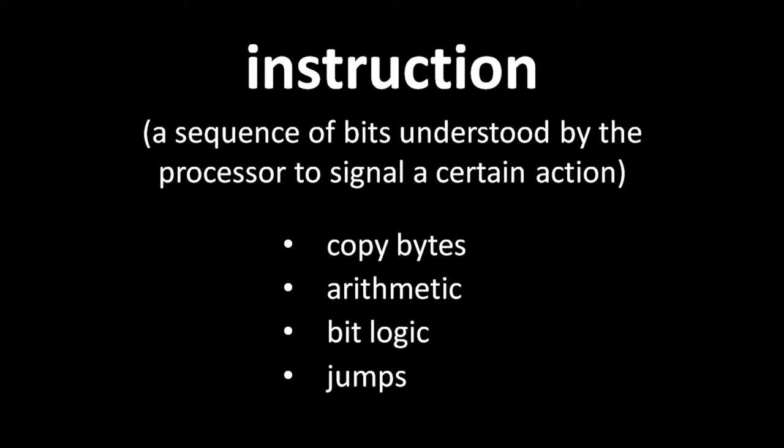The binary sequence which denotes any particular instruction is largely arbitrary, and so different CPUs understand different sets of instructions. For example, the binary sequence denoting an addition instruction on one CPU may not be a valid instruction on another CPU. In fact, one CPU may have instructions which another CPU does not have at all. Some simpler CPUs have no instruction for performing multiplication, so code on those processors must perform multiple additions to get the same effect as a multiplication operation.